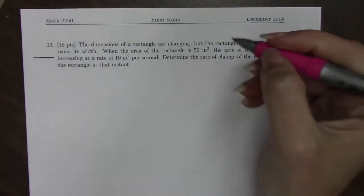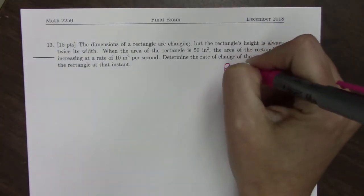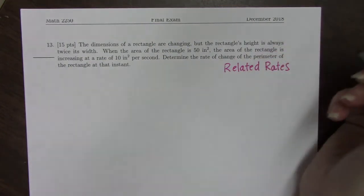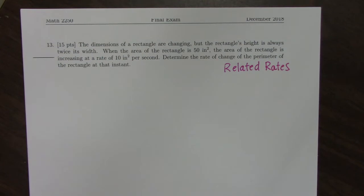This problem is going to be a related rates question. It says the dimensions of a rectangle are changing, but the rectangle's height is always twice its width. So let's start right there.